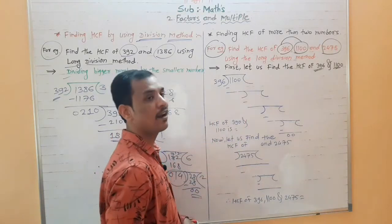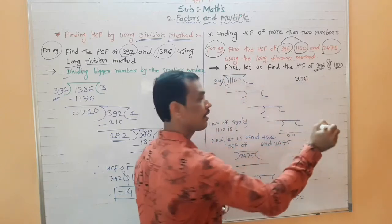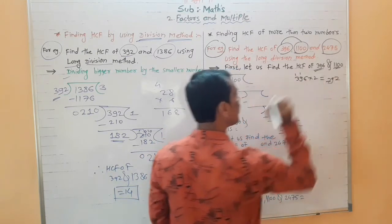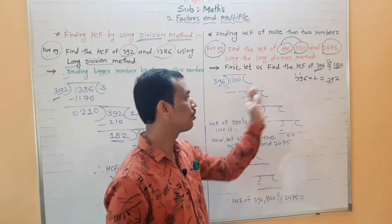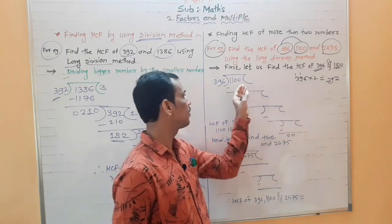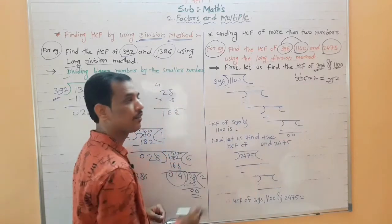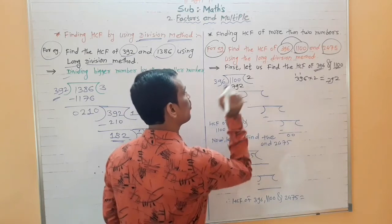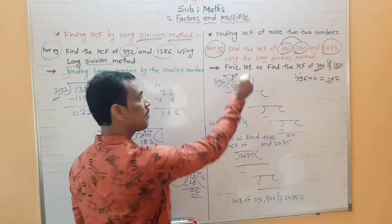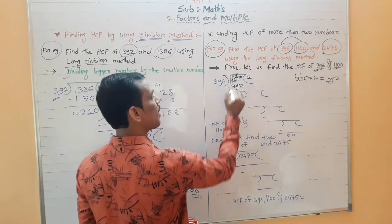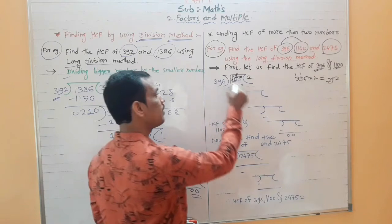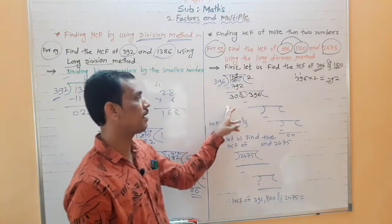Divide 1100 by 396. Make a table for 396: 396 into 1 is 396, 396 into 2 gives 792. 396 into 3 would be more than 1100, so we choose 2. Now 1100 minus 792: 0 minus 2 not possible, take from next side — 10 minus 2 is 8, 9 minus 9 is 0, 10 minus 7 is 3. Remainder is 308.